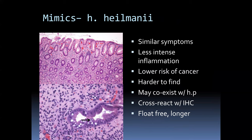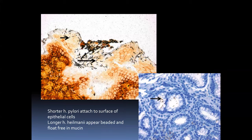What can look like Helicobacter pylori? It has a few phylogenetic cousins, one of which is Helicobacter heilmannii. This can produce similar symptoms but has less inflammation, not very striking, a lower cancer risk, and is much harder to find. It may coexist with and cross-react with H. pylori. H. pylori tends to attach to the surface of epithelial cells. Helicobacter heilmannii, by contrast, has a sort of beaded appearance on Steiner stain and tends to float free in the mucin rather than having a surface epithelial connection.